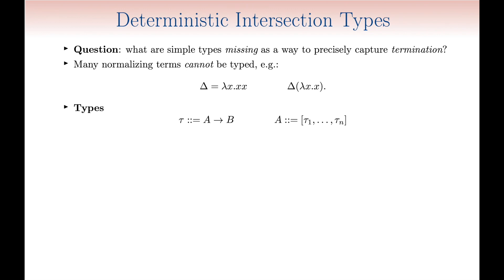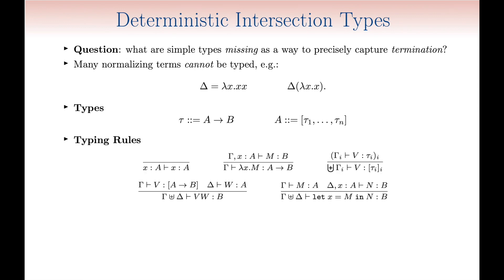The idea behind intersection types is precisely the one of allowing the same term to be typed in distinct ways, by enriching the type system with sets or multisets of types. Here we present the variant with multisets, in which the intersection operator becomes non-idempotent.